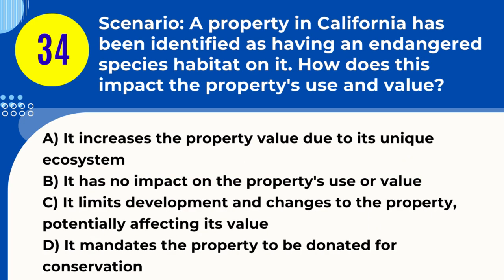Question 34. Scenario: A property in California has been identified as having an endangered species habitat on it. How does this impact the property's use and value? A. It increases the property value due to its unique ecosystem. B. It has no impact on the property's use or value. C. It limits development and changes to the property, potentially affecting its value. D. It mandates the property to be donated for conservation. Answer: C. Explanation. If a property in California is identified as having an endangered species habitat, it can impact the property's use and value by limiting development and changes that can be made to the property, due to environmental protection laws that aim to preserve endangered species and their habitats.